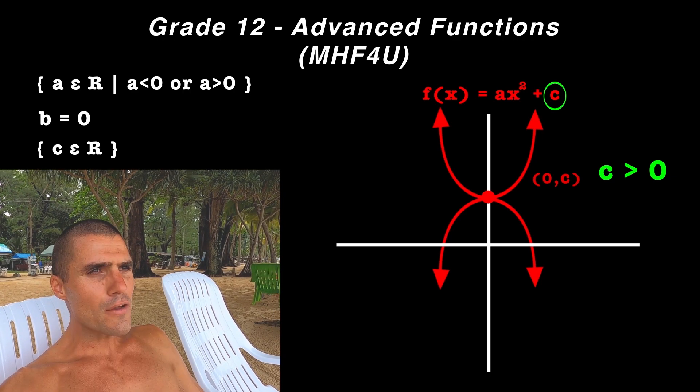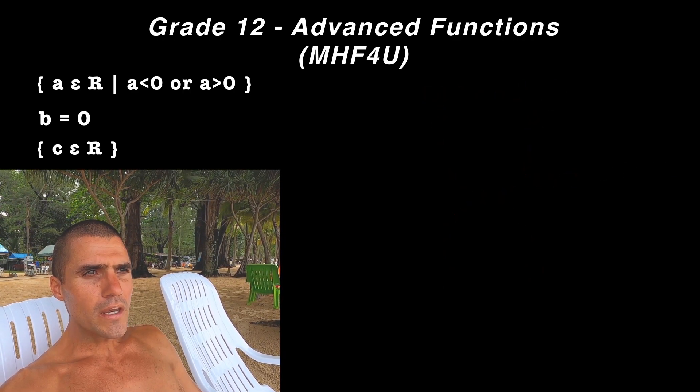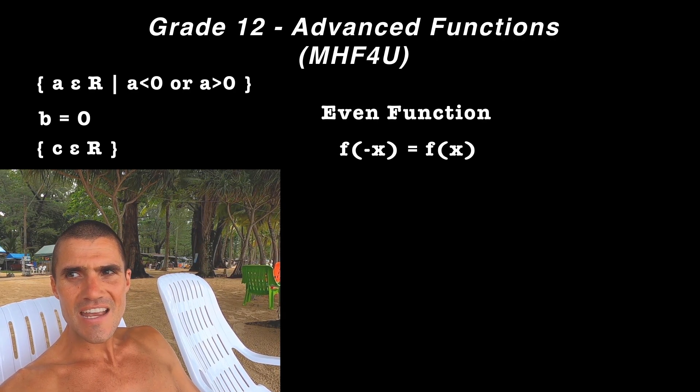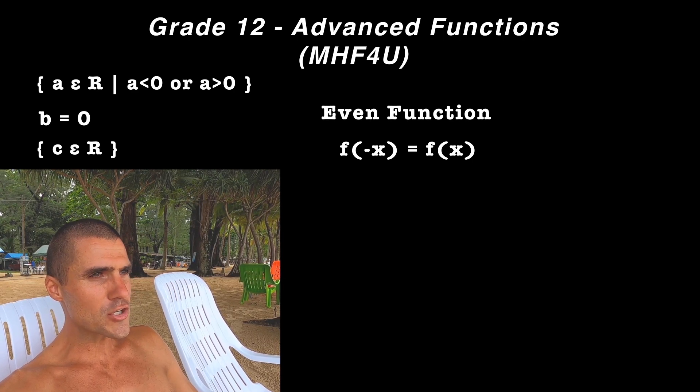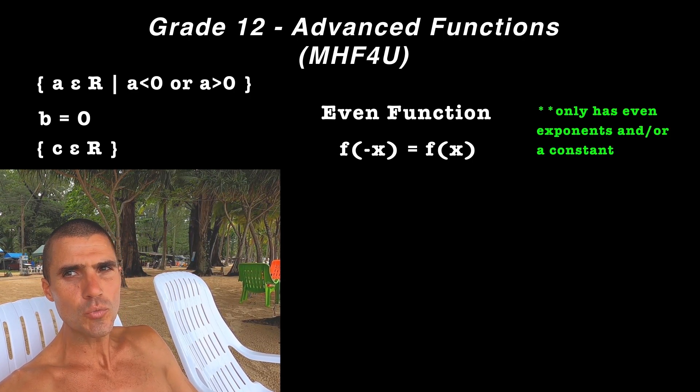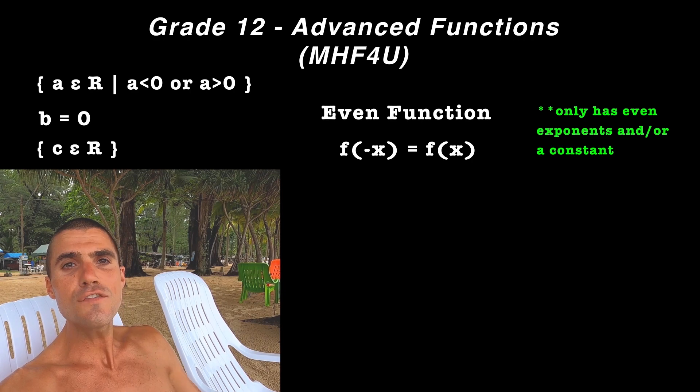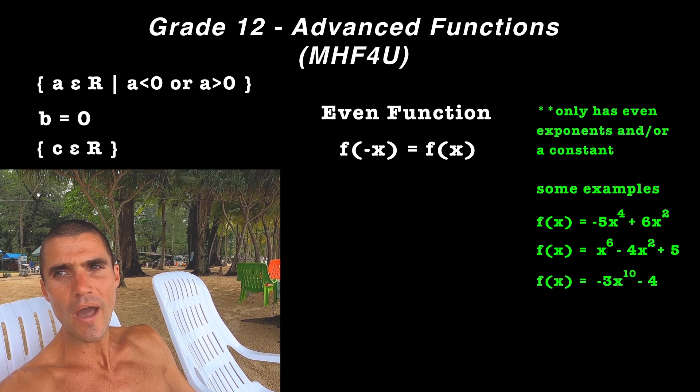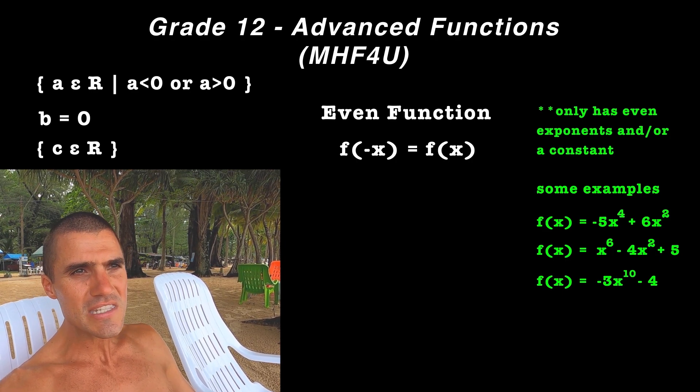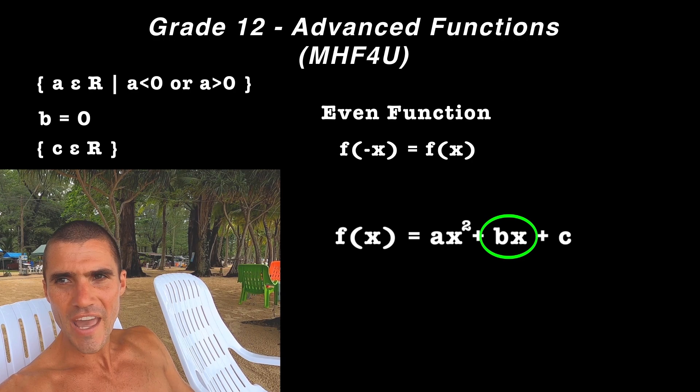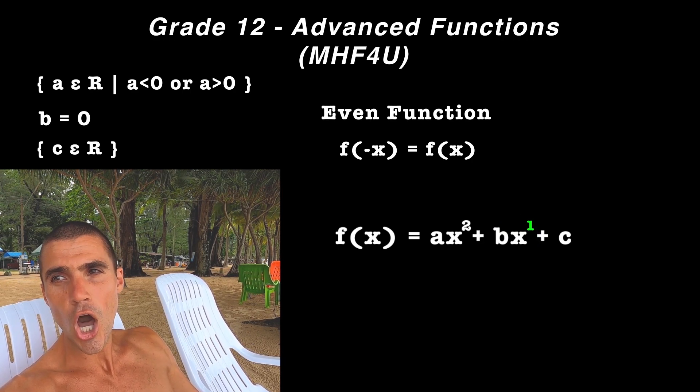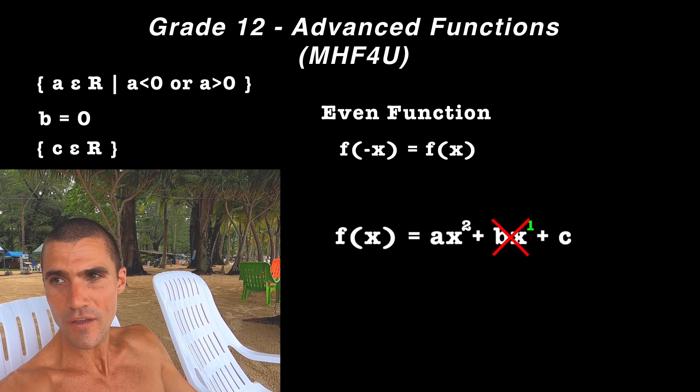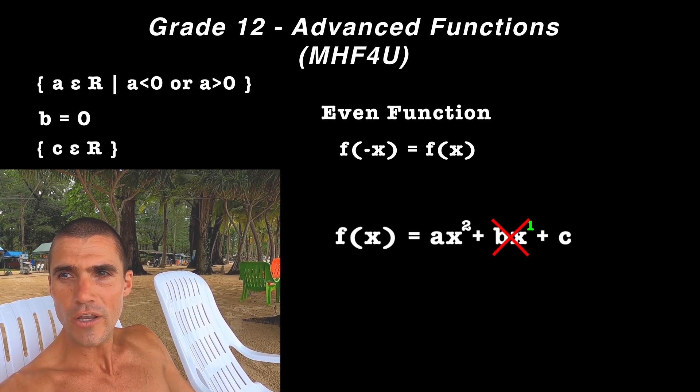Now, if we looked at this algebraically, we know that an even function f(-x) has to equal f(x). And another thing we mentioned is that an even function would only have even exponents if it's a polynomial, which a quadratic is, and it could also have constants. And so notice that that bx term—there's an x to the power of one, and one is an odd number—and so that exponent can't be there in order for the function to be even. So that's another way to look at it: that b value would have to be zero.